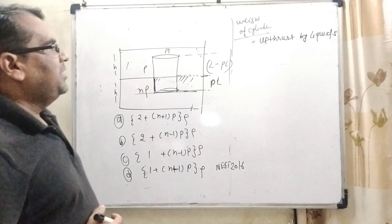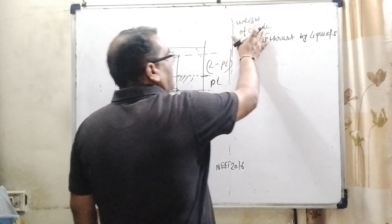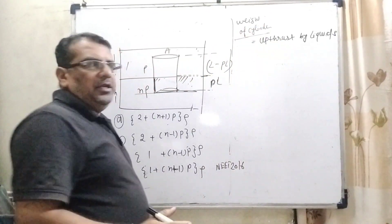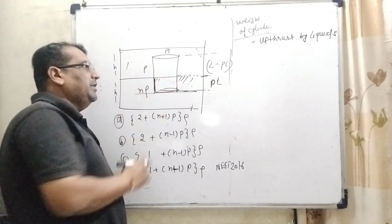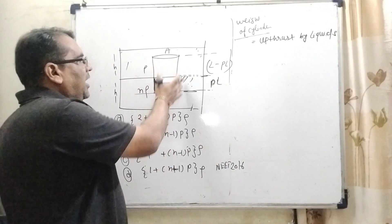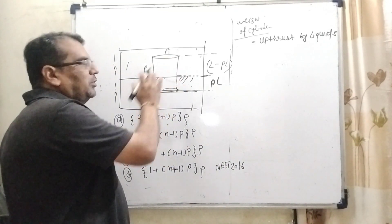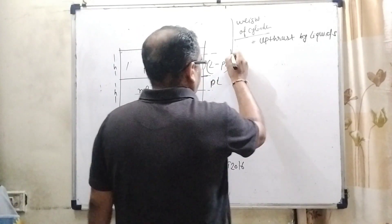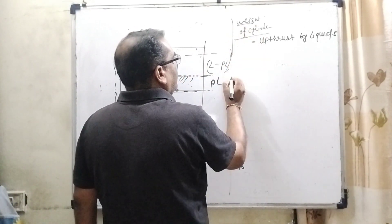Now according to Archimedes principle, the weight of the cylinder is equal to the upthrust by liquids. Here we have two liquids, so therefore upthrust is acting on the cylinder by both liquids.